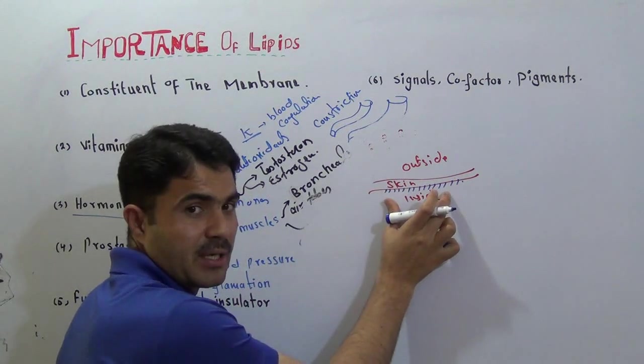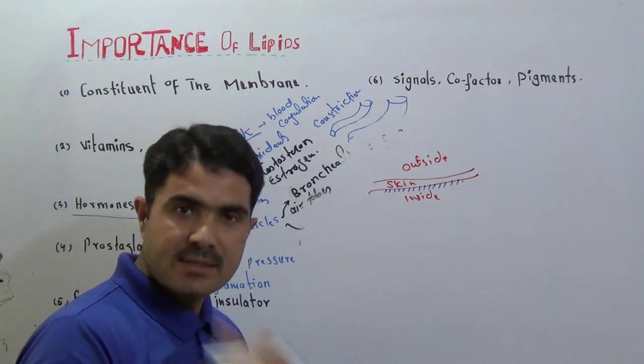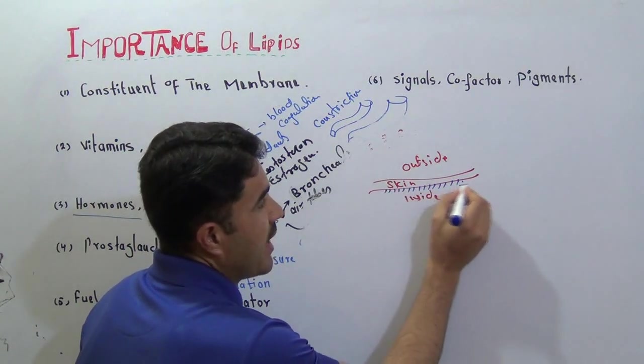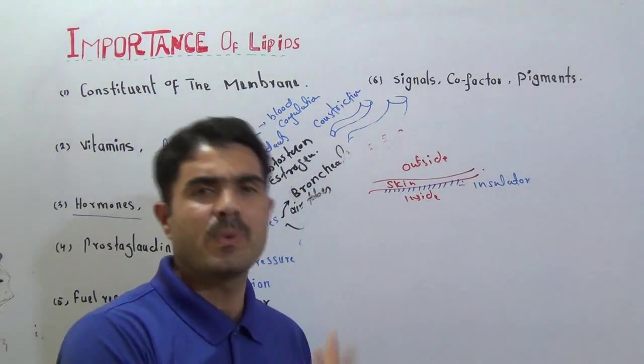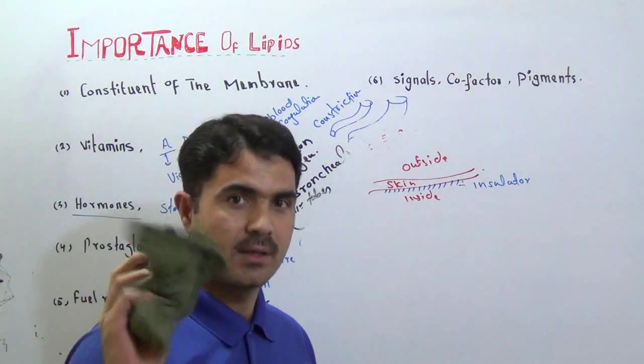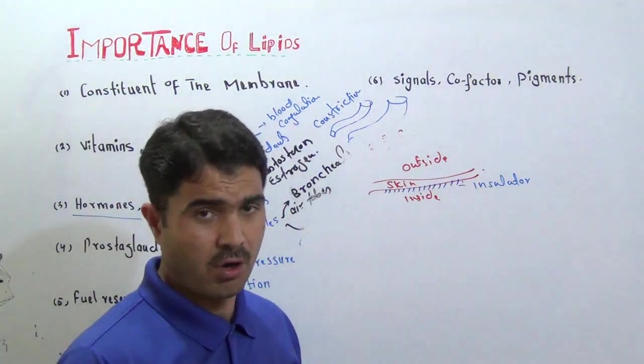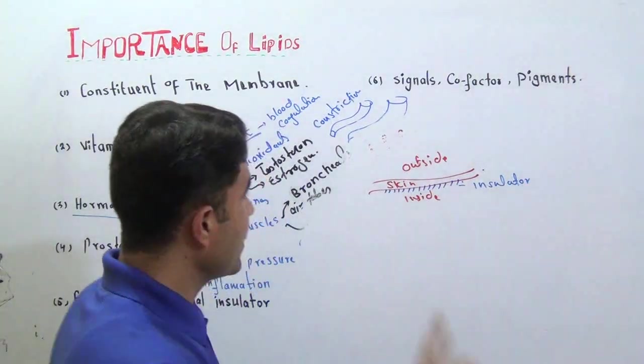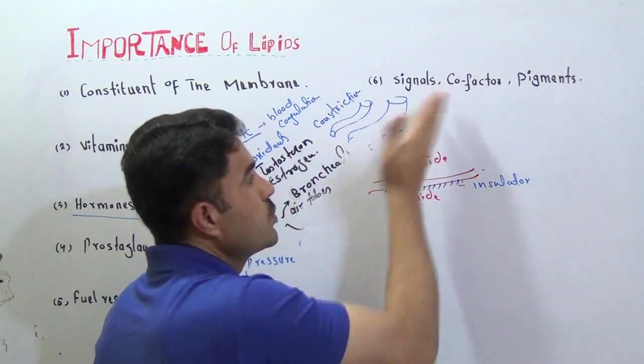In the winter season, there's a chance that body temperature gets decreased. This lipid will act as an insulator. Insulator means something which does not allow heat to pass through. You hold electrical equipment with the help of some insulator or a cloth. The cloth acts as insulator; similarly, below our skin, there is lipid. This lipid acts as an insulator and will not allow your body heat to pass out.